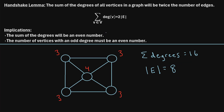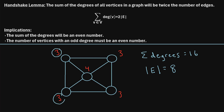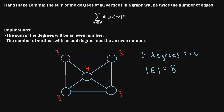Both implications of the handshake lemma are also true here. The sum of the degrees is an even number — yes, 16 is even. And the number of vertices with an odd degree must be an even number. We have four vertices with an odd degree of three each, and four is an even number. Those were three different examples showing how the handshake lemma applies to different graphs.